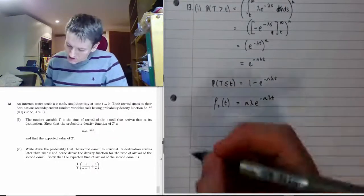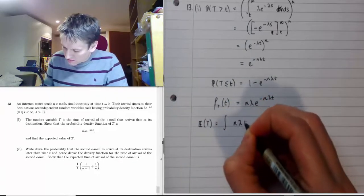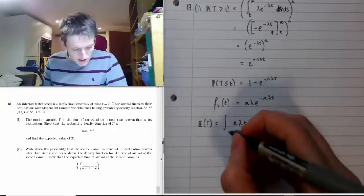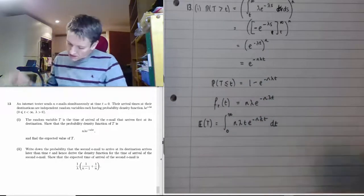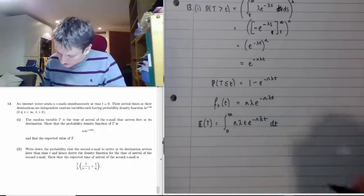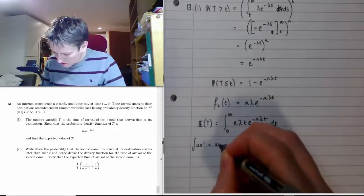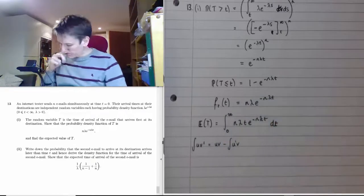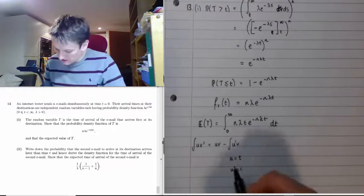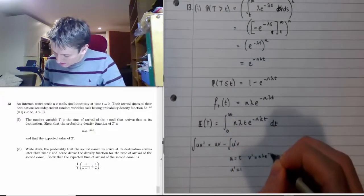Next, find the expected value of T. For a continuous random variable, we take the PDF, multiply it by t, and integrate over the whole range. Here t ranges from 0 to infinity, and since we have a factor of t multiplied by the exponential, we need integration by parts. Setting u = t and v' = nλe^(−nλt), differentiating u gives 1, which simplifies things, and integrating v' gives v = −e^(−nλt).